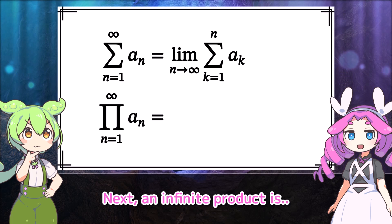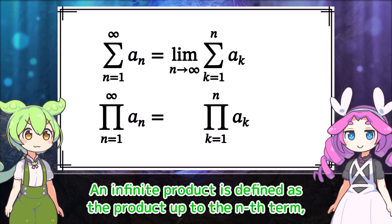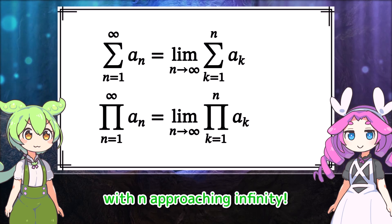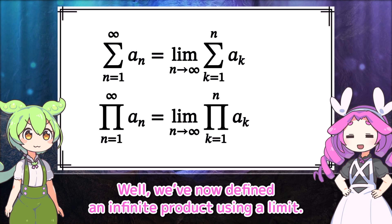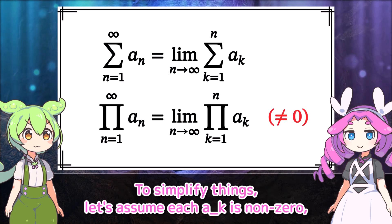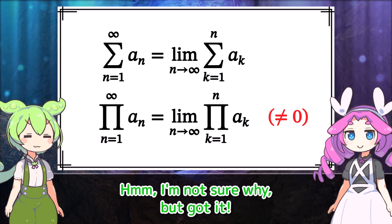Next, an infinite product is — I already got it. An infinite product is defined as the product up to the nth term, with n approaching infinity. We've now defined an infinite product using a limit. To simplify things, let's assume each a_k is non-zero, and we'll exclude cases where this limit converges to zero.